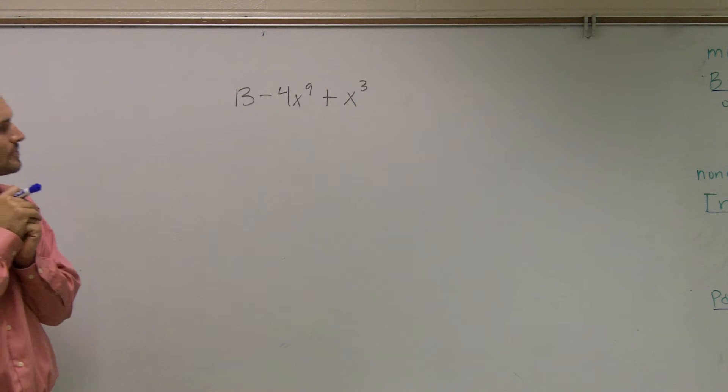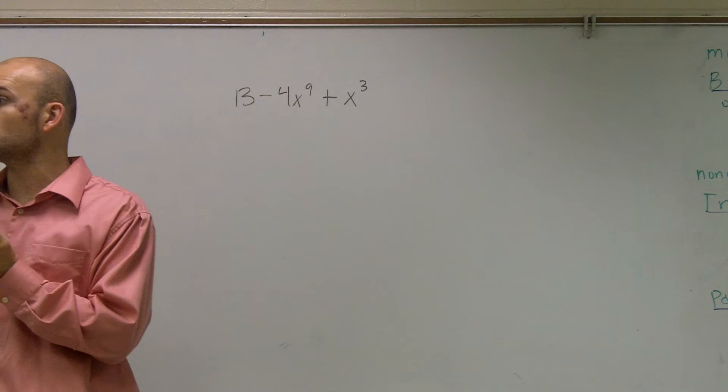Here we have 13 minus 4x to the 9th plus x cubed. What it asks is to first put it in standard form.